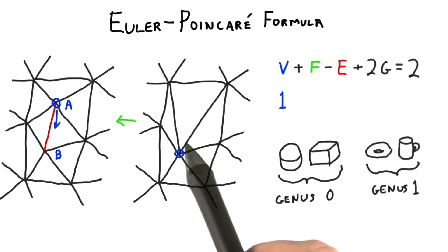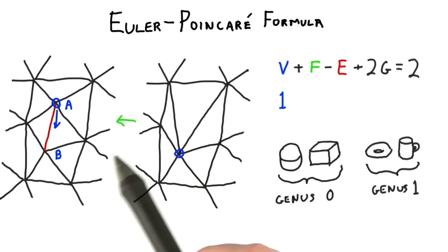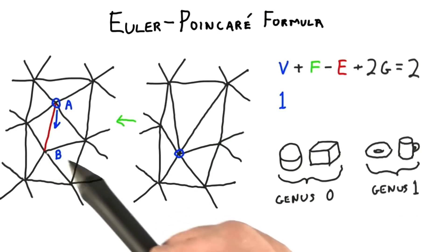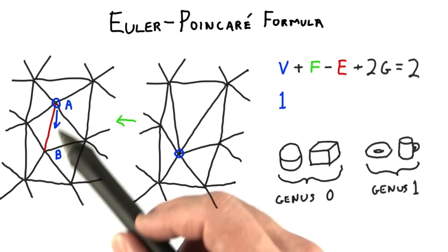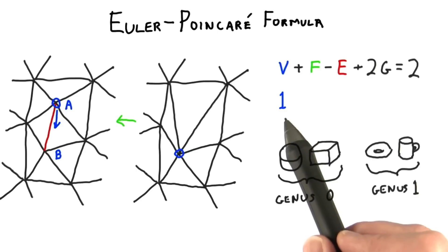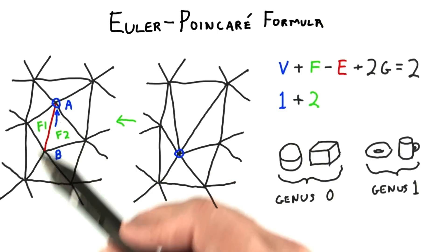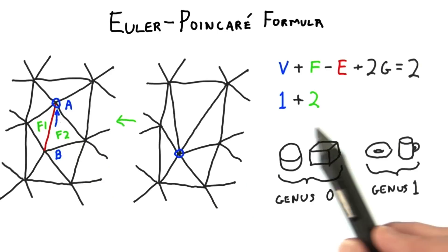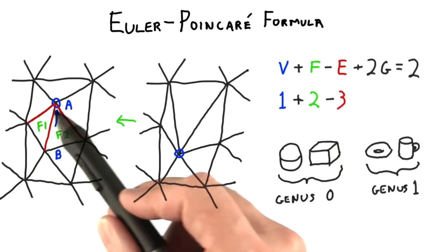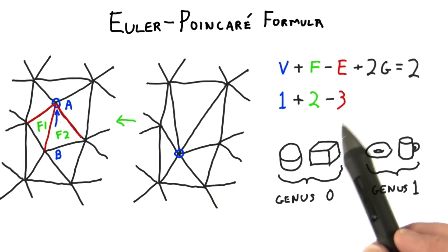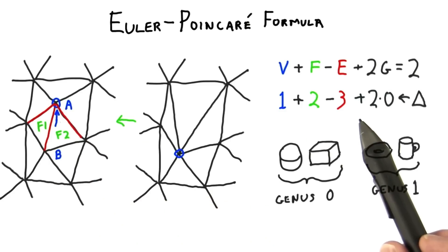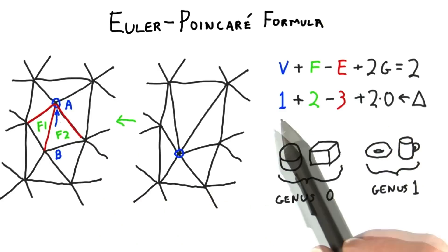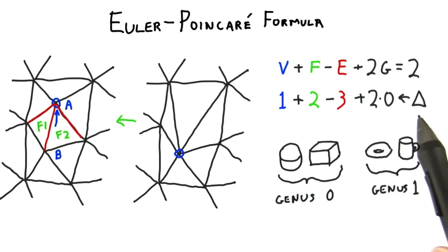An edge collapse is a reversible process, so let's show how it affects the formula. First, we know we're going to have a vertex created, so that's 1. We can see that as the point moves up, two faces are created, so that's two faces. We can also see three edges are created. The genus doesn't change — there are no holes created or destroyed. We can see this sums up to 0, the delta.